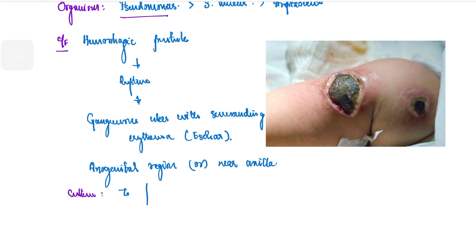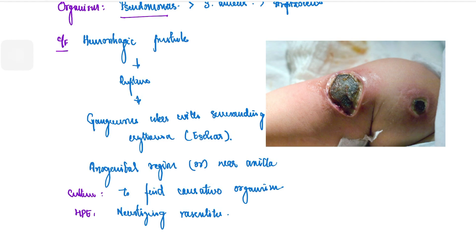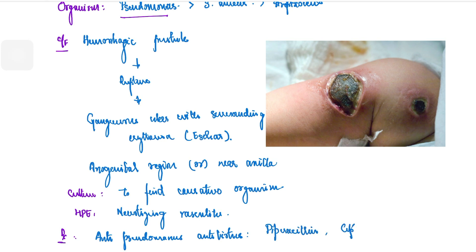On culture you will find the causative organisms, and treatment should be based on culture and sensitivity. On biopsy you would see necrotizing vasculitis. The bacteria gain entry into the vessels, are seeded in the dermis, induce inflammation and cause necrotizing vasculitis, which obstructs the vessels leading to gangrene — manifested as a gangrenous ulcer. Since the most common cause is Pseudomonas, you can start empirically with anti-pseudomonal antibiotics such as piperacillin, third or fourth generation cephalosporins, or aminoglycosides.